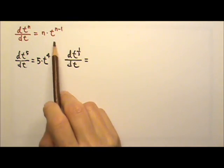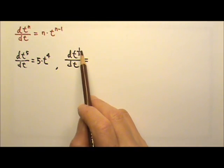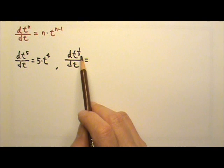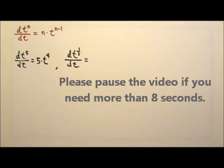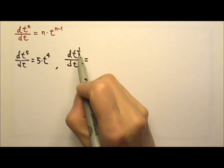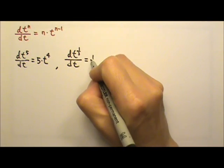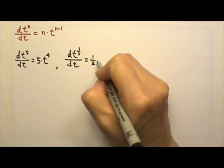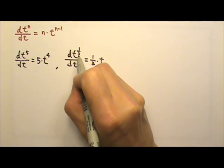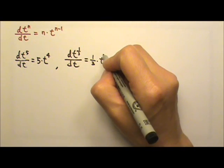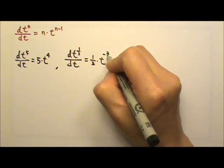This equation also works when the exponent is a fraction. See if you can figure out this one. We bring the exponent down as a coefficient, and we lose one degree of power — so 1 third minus 1 — we get negative 2 thirds.